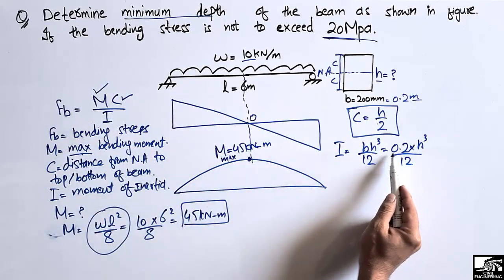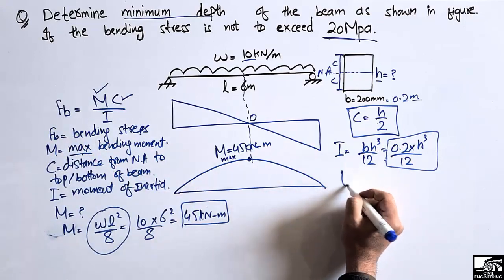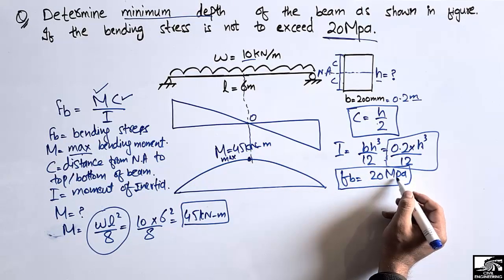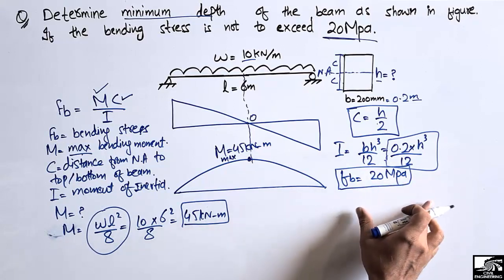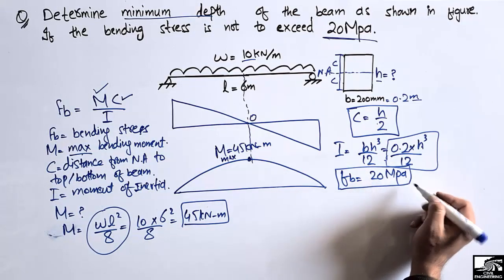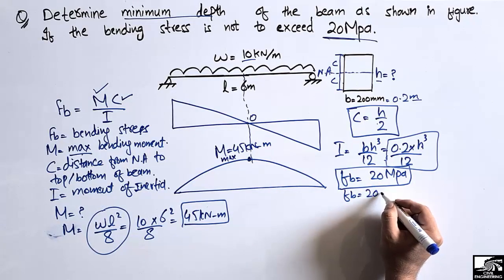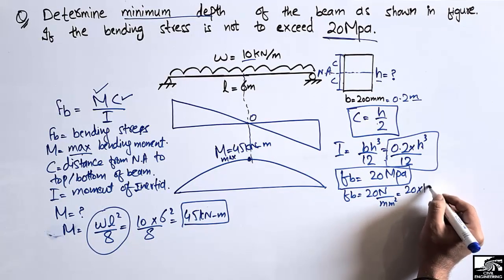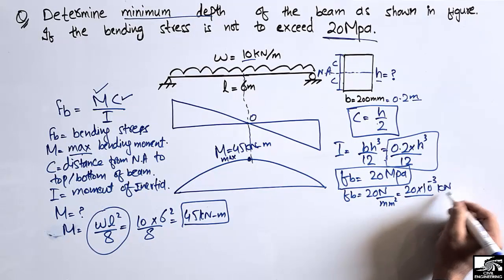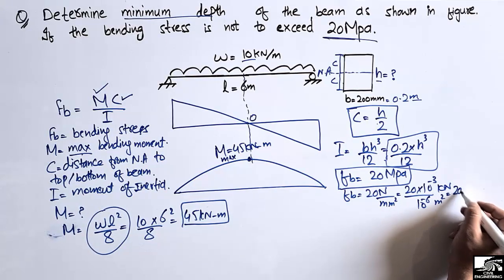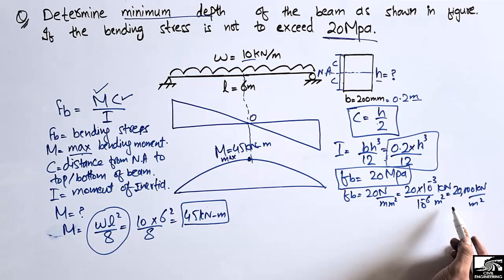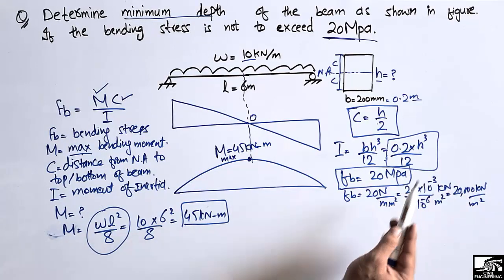The bending stress f_B is also known as 20 megapascals, but this unit must be converted to kN/m² units. Since 1 MPa equals 1 N/mm², converting Newton to kilonewton gives 10⁻³ kN, and millimeter squared to meter squared gives 10⁻⁶ m². Therefore 20 MPa equals 20,000 kN/m².